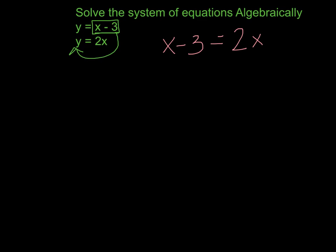Now I'm just going to solve for x. So I subtract x on both sides. Negative 3 equals 2x minus 1x is 1x. So x is equal to negative 3.